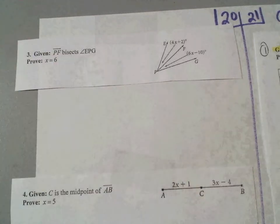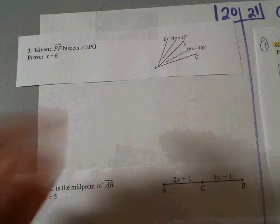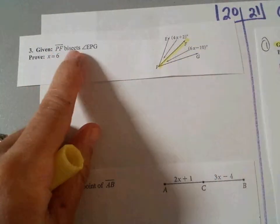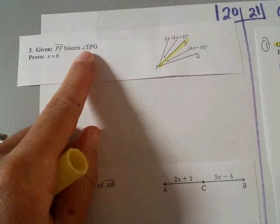So look at your picture right away. Ray PF. That would be from here to here. Remember, bisects angle EPG. EPG.